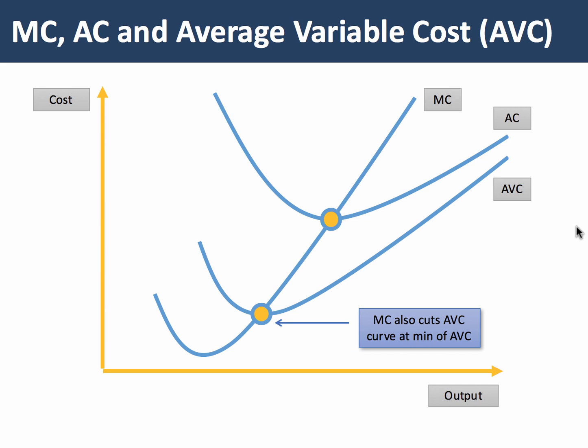Now let's put in average variable cost. Average variable cost is the variable cost per unit. It's also worth noting that marginal cost must cut the average variable cost at the minimum point of AVC.